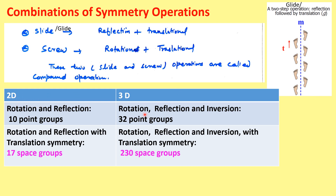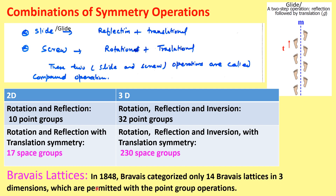In two and three dimensions, combinations of symmetry operations create point groups and space groups. In 2D, combining rotation and reflection with translation gives 17 space groups. In 3D, adding translation to rotation, reflection, and inversion gives 230 space groups in total. Bravais in 1888 categorized 14 Bravais lattices in three dimensions that are permitted from these 3D point groups.